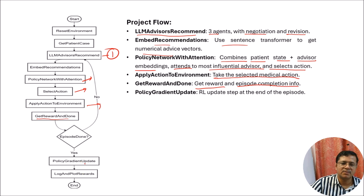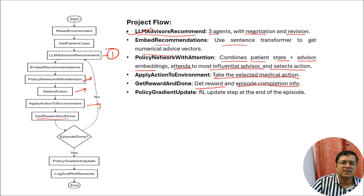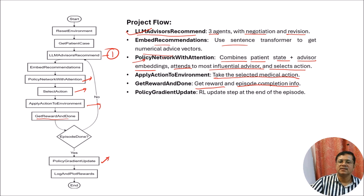You can update the policy gradient and log and plot the rewards. If the diagnosis is not correct, you go back to the LLM advisor's recommendation. This entire process continues, and the continuous process helps in learning a lot of things like a policy gradient decision system and a policy network retention system. These systems actually learn some weights so that in future, if you get new data, they will give more effective decisions.